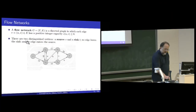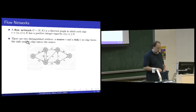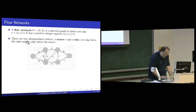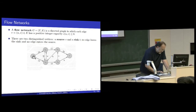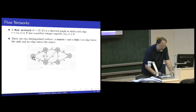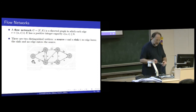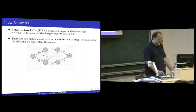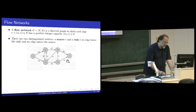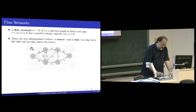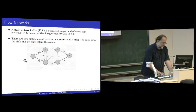What is a flow network? Think about a computer network. This is your computer, and you want to pirate the latest movie from this server. The internet is a complicated network — this server is connected by several outgoing channels to other computers. Because you are worried about getting caught, you want to download the movie as fast as possible, so your task is to direct the traffic to maximize the total throughput through the network.